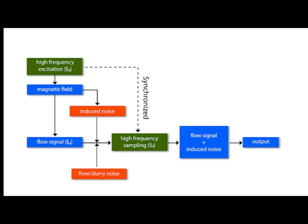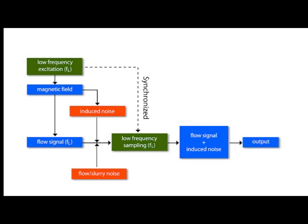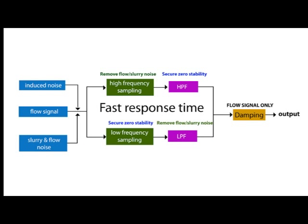In order to eliminate the zero drift problem of an AC magmeter, this output is then high-pass filtered, allowing only the rapidly changing components of flow to pass. The output of the low frequency method provides excellent zero stability, but to eliminate the erratic output that results from slurry noise, it is low-pass filtered, eliminating the slurry noise by damping. The filter time constants are equal in value, but inverted such that when the filtered outputs are summed together, the original flow signal input is recreated at the output, without slurry noise or zero drift.